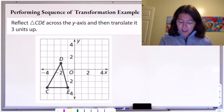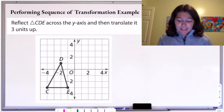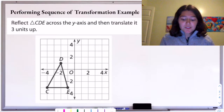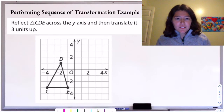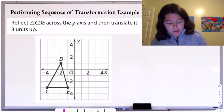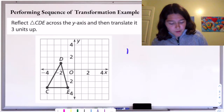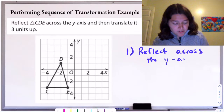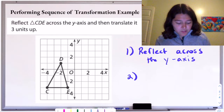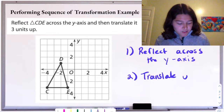Here we have triangle C, D, E. We're told to reflect triangle CDE across the y-axis, and then translate it three units up. So step number one, we're going to reflect across the y-axis — note the order, we need to do that first — then we need to translate up three.